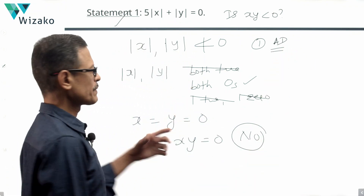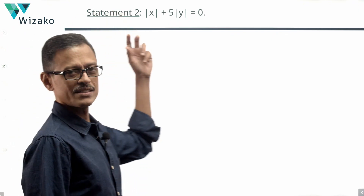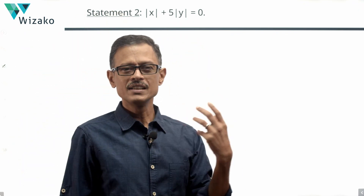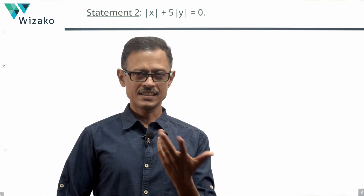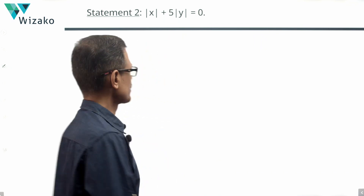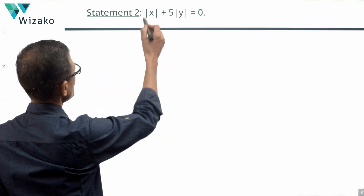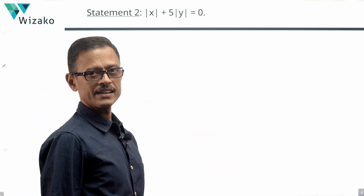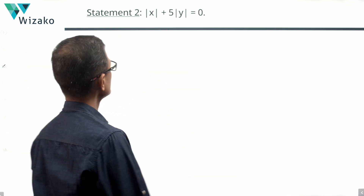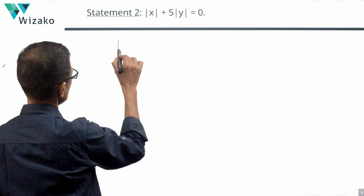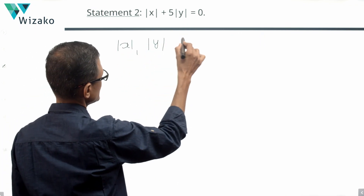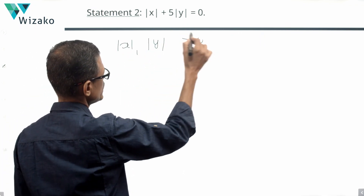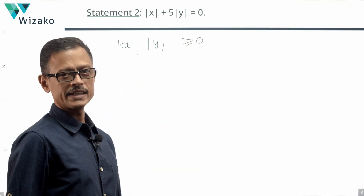Now take a look at Statement 2 — you could pause the video at this point, evaluate the statement, and see if you can come up with a similar conclusion. Statement 2: modulus of X plus 5 times modulus of Y is equal to 0. We know that modulus of X and modulus of Y are both greater than or equal to 0 — they can never be negative.